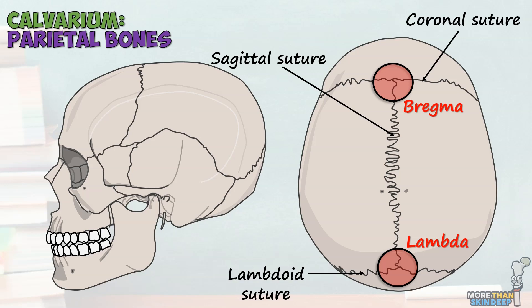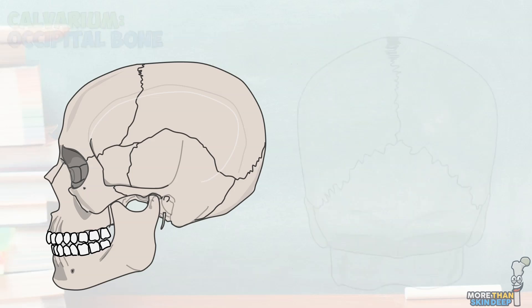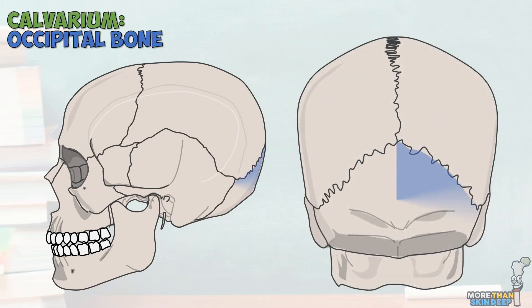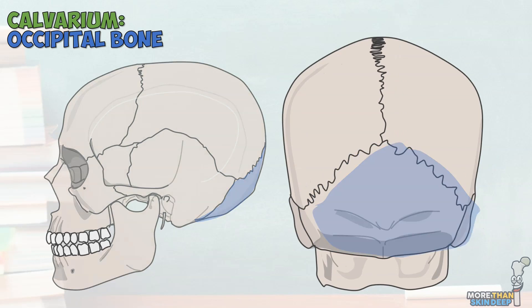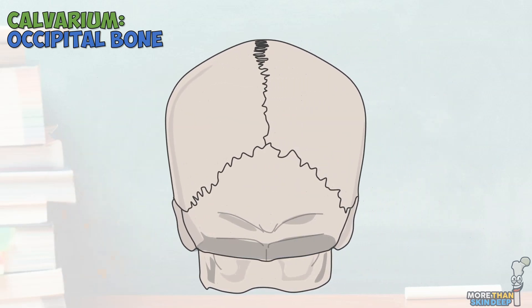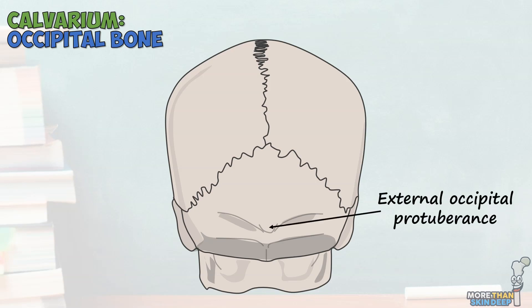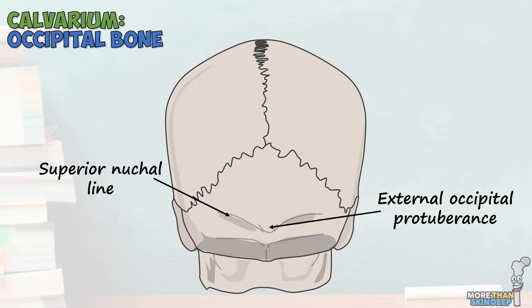Note these two small perforations in the parietal bones known as the parietal foramina. The final bone of the calvarium is the single occipital bone, which forms the most posterior part of the skull. The occipital bone forms the foramen magnum and is the point of attachment for important ligaments that stabilise the neck and spine. One of these is the nuchal ligament, which attaches to the occipital bone at the external occipital protuberance. This is also a point of attachment for the large trapezius muscle. Extending outwards from the external occipital protuberance are the superior nuchal lines, which are also points of attachment for trapezius, as well as the splenius capitis and occipitalis muscles.